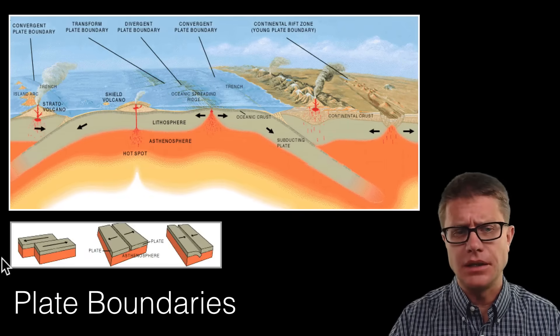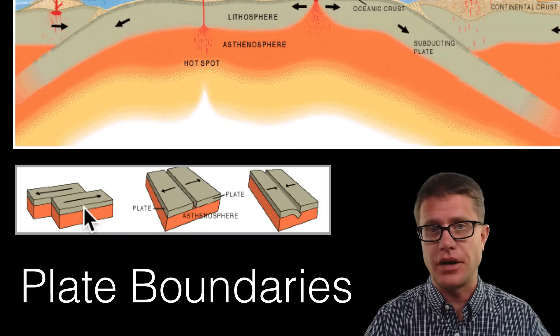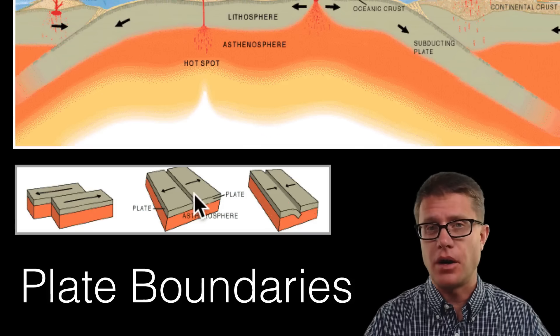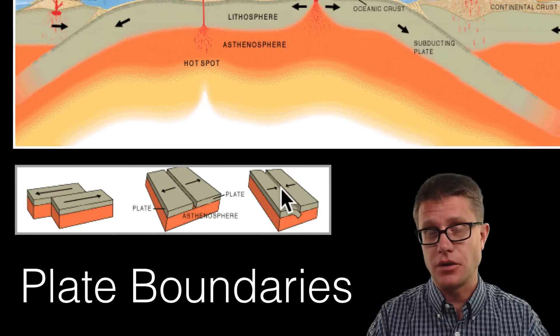So what happens when plates meet is that they can do one of three things. They can slide past one another in this transform boundary. They can move apart. We call that a diverging boundary. Or they can run into each other. That is converging.